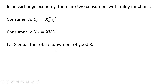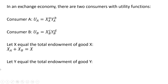Let X equal the total endowment of good X, so X equals the initial endowment of good X from person A plus the initial endowment from person B. Likewise, let Y equal the total endowment of good Y, where the total endowment of good Y is the endowment from person A plus the endowment from person B.